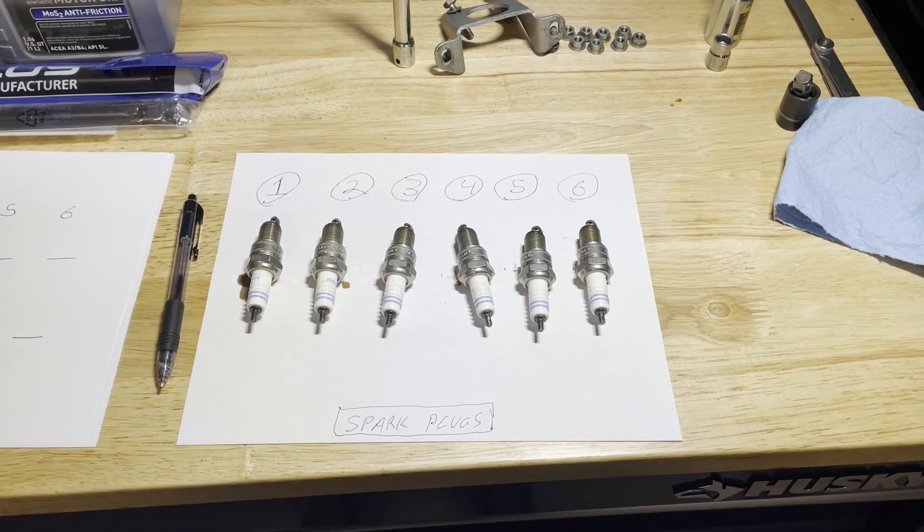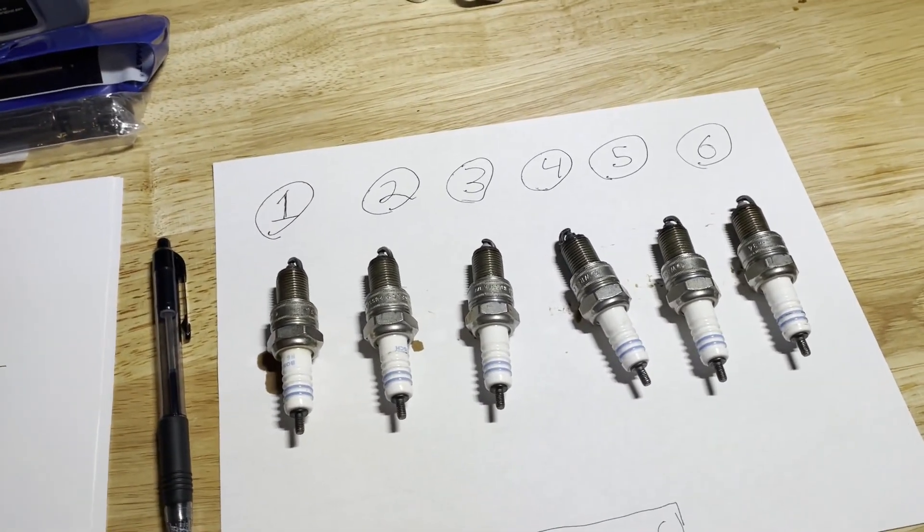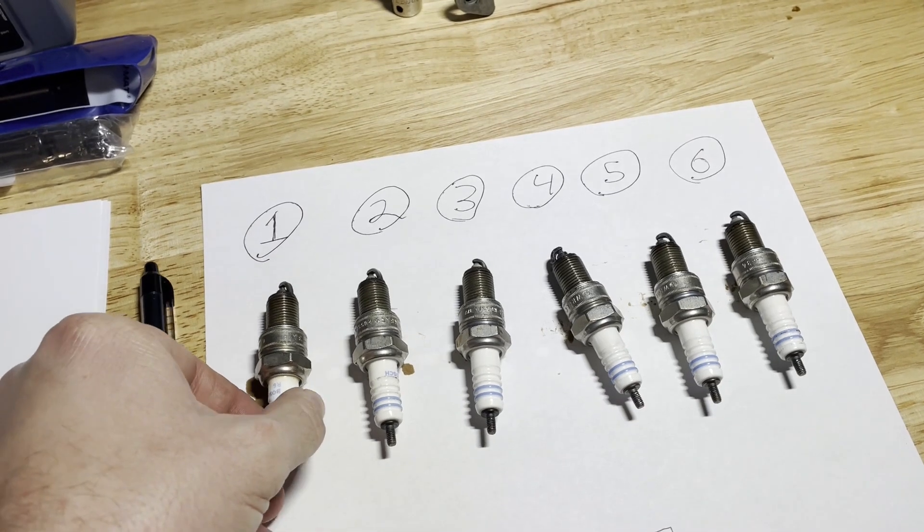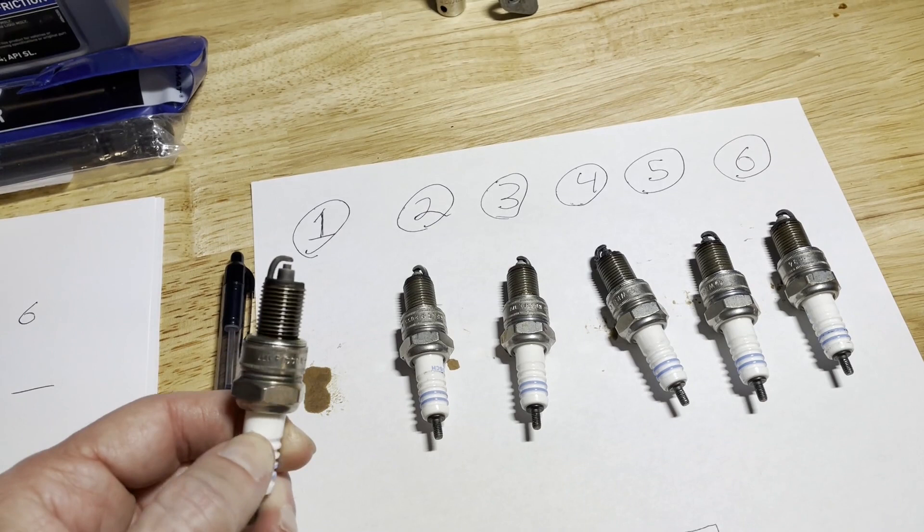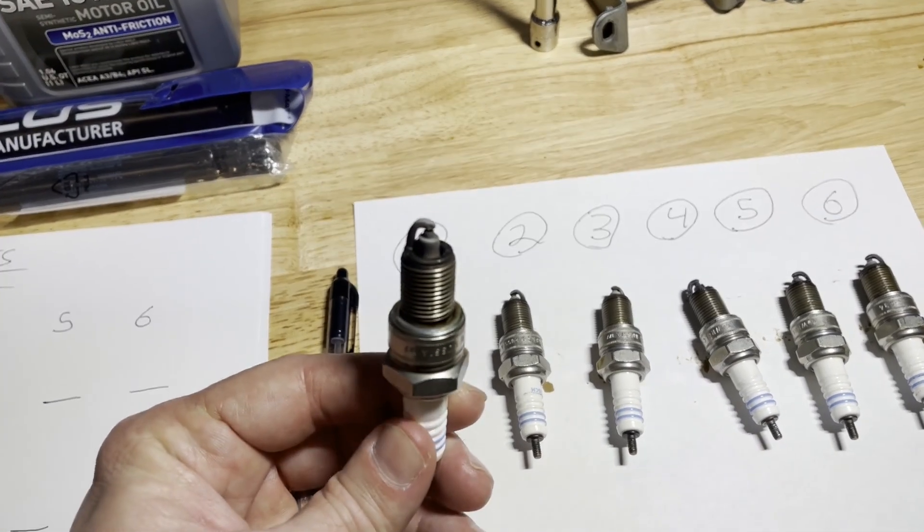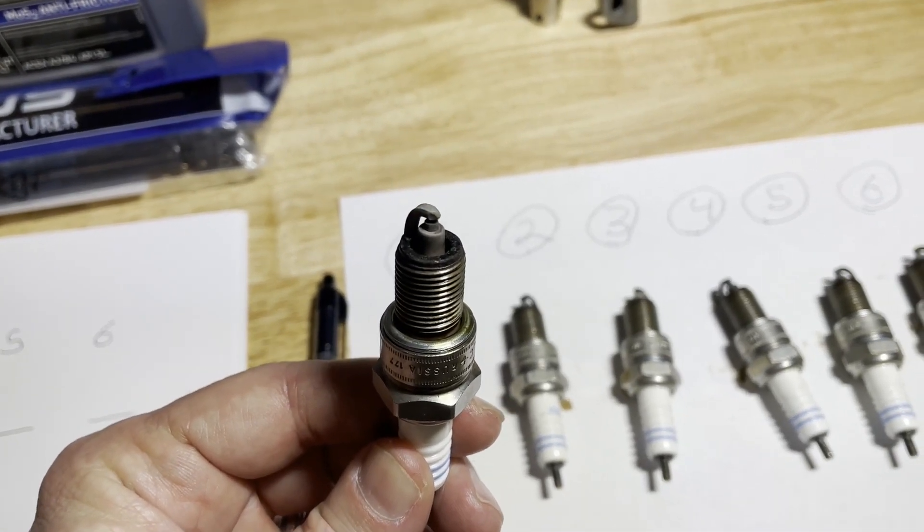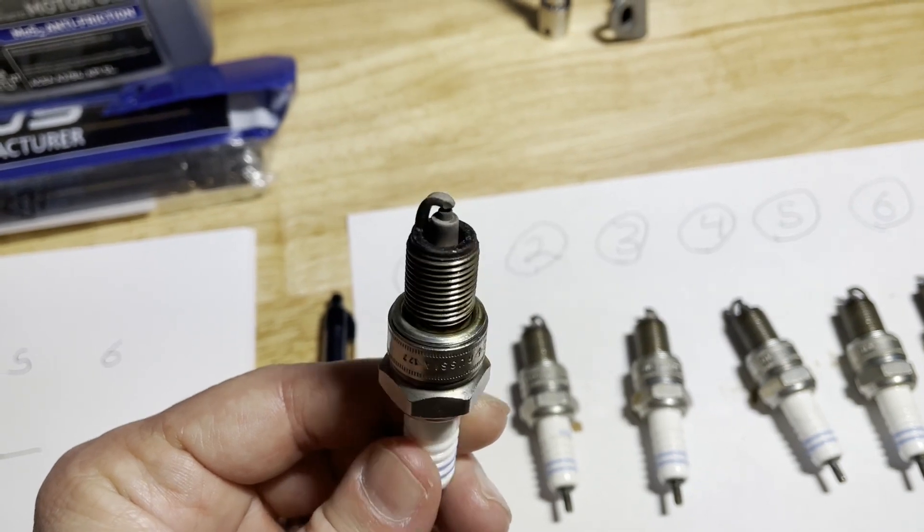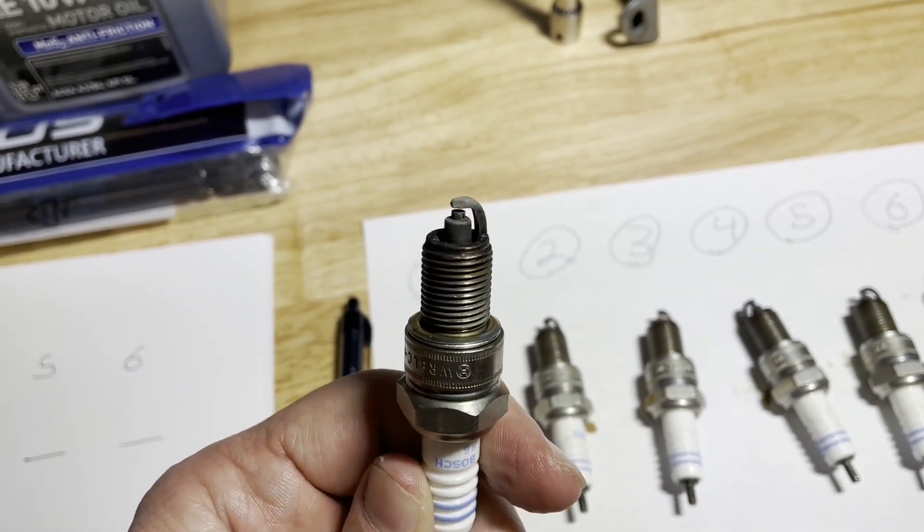We pulled the spark plugs out, so we're going to show you what these are. First of all, that little bit of oil was on the outside. I don't know if we didn't put our cap down right or something, but there's just a little bit of oil coming out of the filler cap. Here's number one.